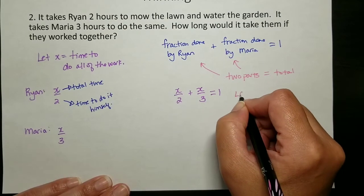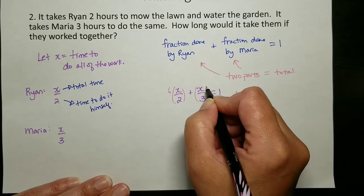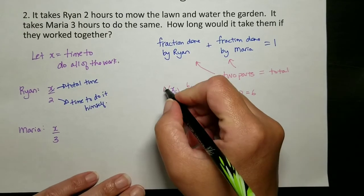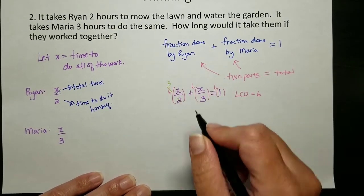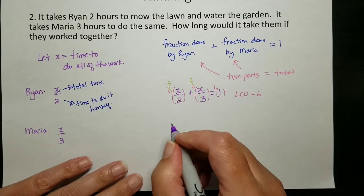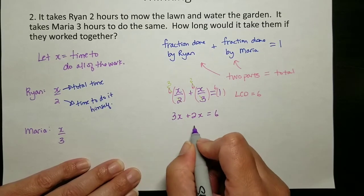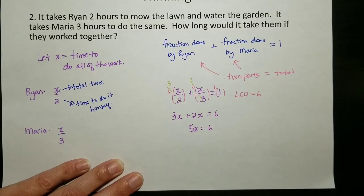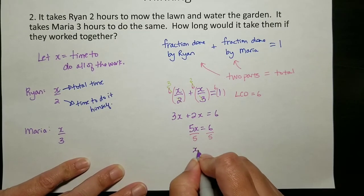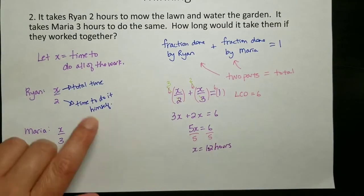So I'm going to take this equation and multiply by the lowest common denominator, which is six. So I'm going to multiply each piece by that six, and then we'll look at the reducing. Six over two reduces to three, six over three reduces to two. So we've got three x plus two x equals six, five x equals six, and then we'll divide by five. And because this is a word problem, we're going to say one point two, and this is in hours because it's the amount of time.